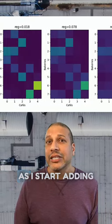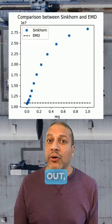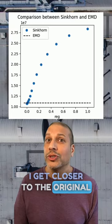See what happens as I start adding more regularization, it gets more and more sparse. In fact, if I plot this out, I can see that by adding enough regularization, I get closer to the original earthmover's distance.